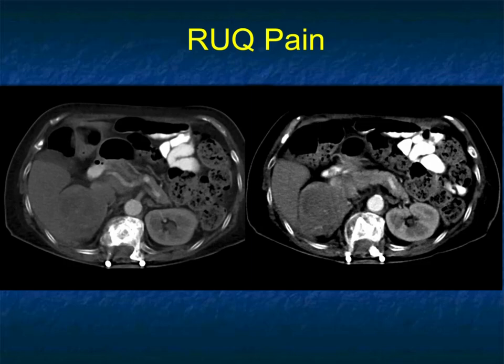Other causes of hemorrhage, particularly when there's an underlying mass, can be more difficult. They're larger and often of mixed attenuation, because often they're picked up incidentally — not at the time of hemorrhage, but later on. Sometimes it is at the time of hemorrhage when the patient presents with right or left upper quadrant pain.